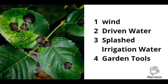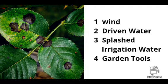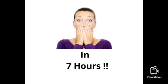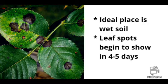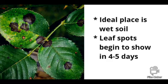The fungus is spread by wind-driven water, splashed irrigation water, and even on garden tools. You will never believe the fungus can affect leaves in as little as 7 hours if conditions are wet. The ideal place to germinate this fungus is wet soil. Leaf spots begin to show 4 to 5 days after the initial infection.